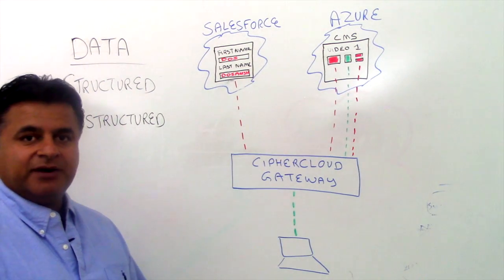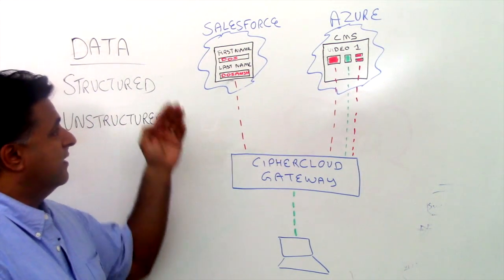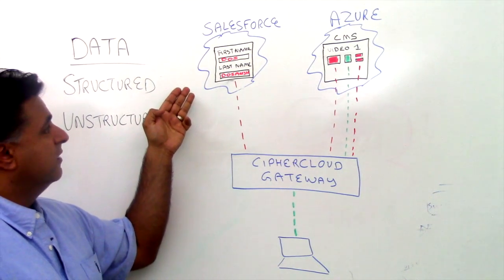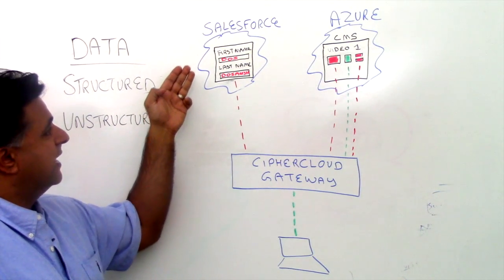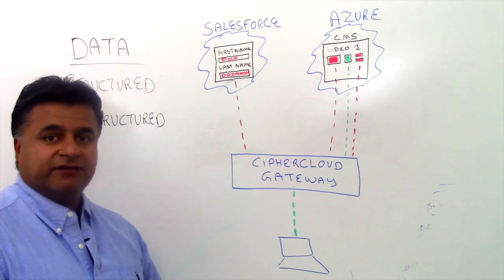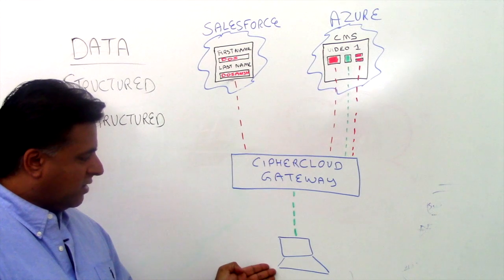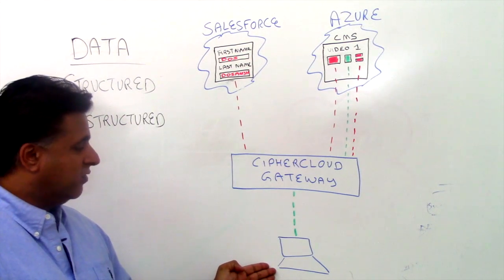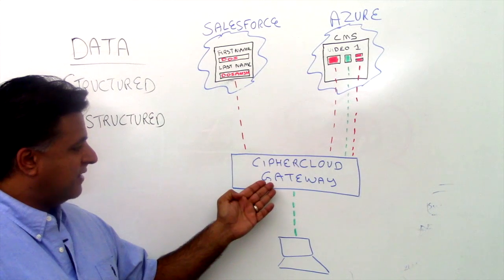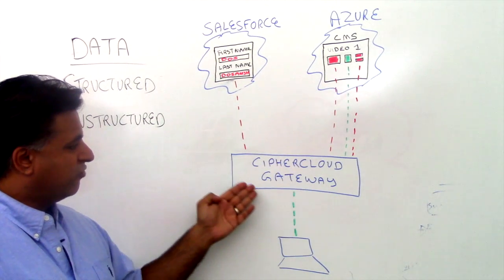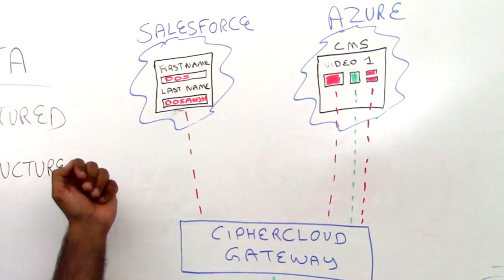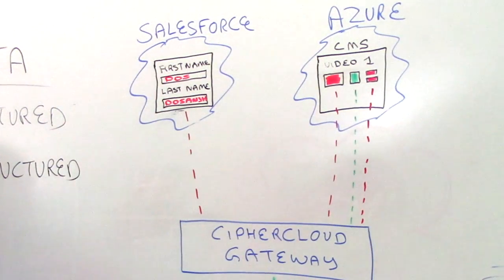I've taken the liberty of using the example of a first name and a last name in a Salesforce form. In this example, the structured data is my name — Das as the first name and Dosanj as the last name. As a person on the enterprise premise actually goes to the Salesforce page, they'll look at those values or enter that value and it gets encrypted at our gateway and then sent to the Salesforce page, where it is now in cipher text.